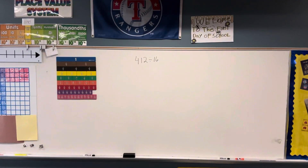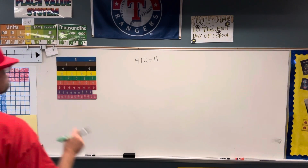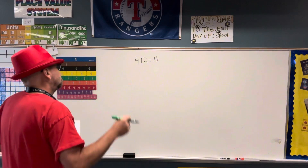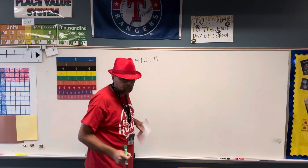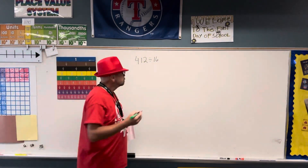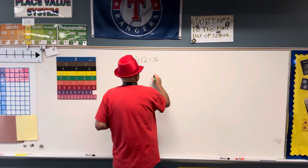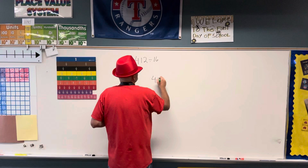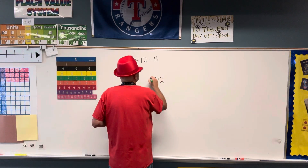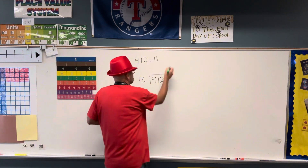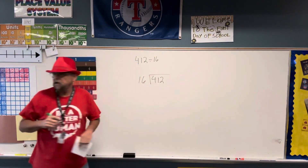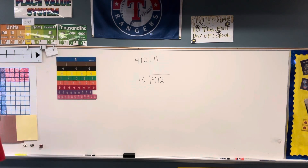We're going to find the quotient of 412 and 16. My dividend is 412, my divisor is 16. I want to find the quotient up there.